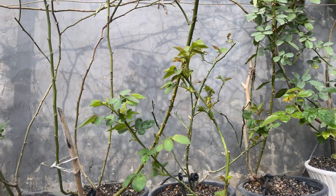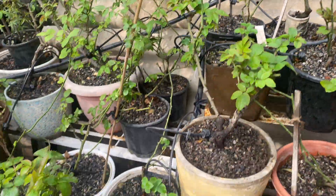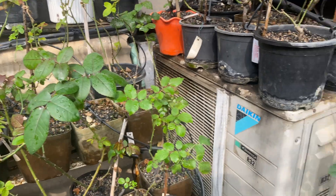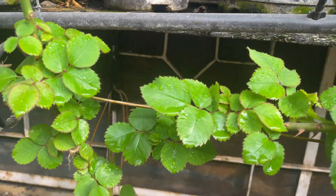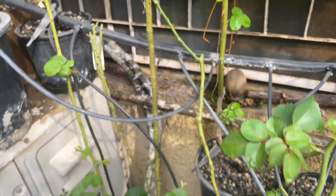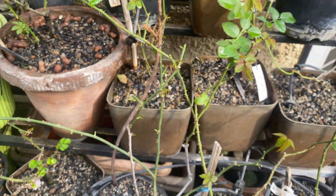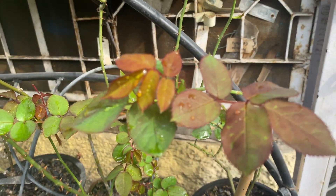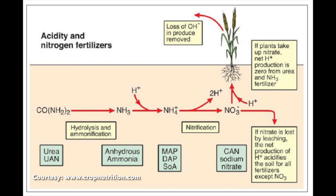Two components basically lower the pH in NPK combinations. One is ammonium sulfate or sulfate formulations of fertilizers, and the second is elemental sulfur — plain sulfur — which converts to sulfate and increases the acidity.